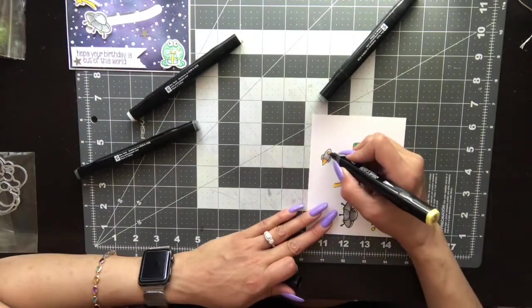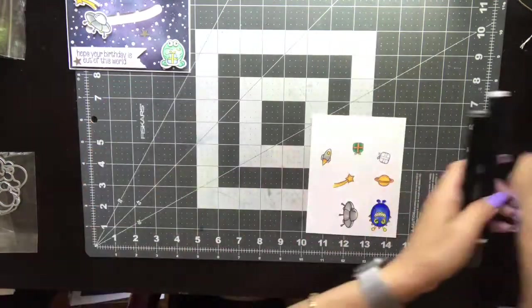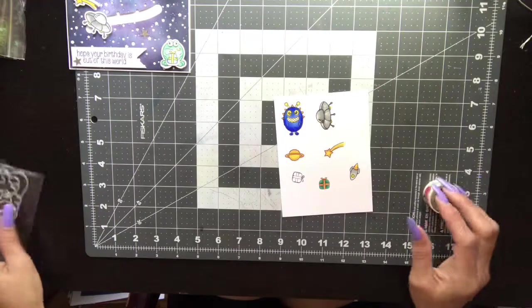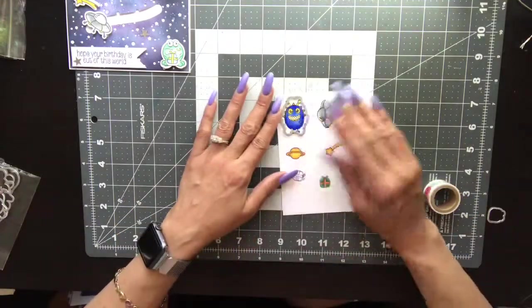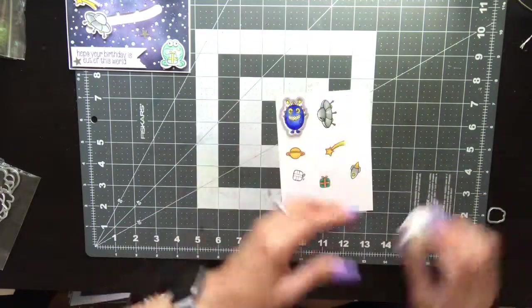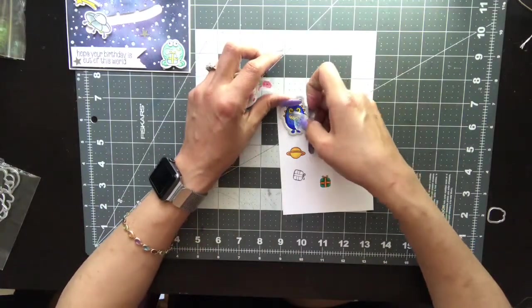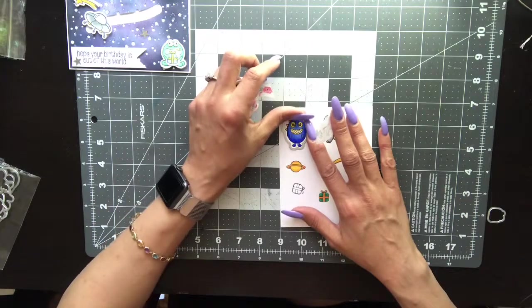I actually purchased the coordinating dies for this set so I'm gonna lay them over the respective images and using a little washi tape to hold them in place, because the last thing you want when you're running it through your machine is for them to shift.